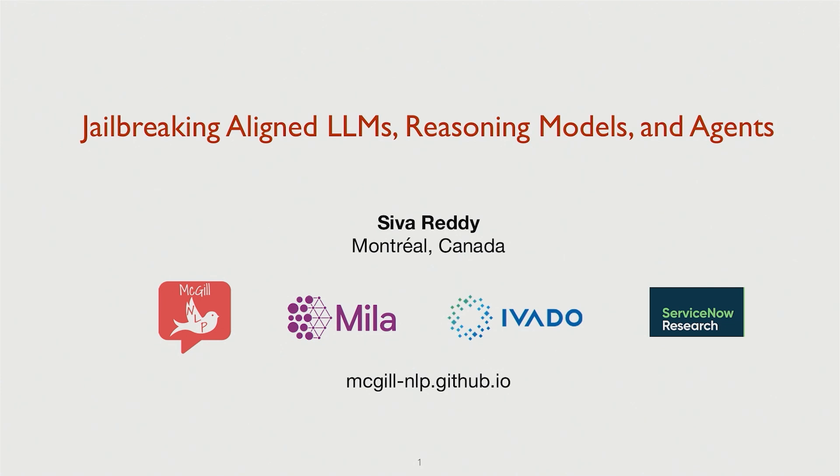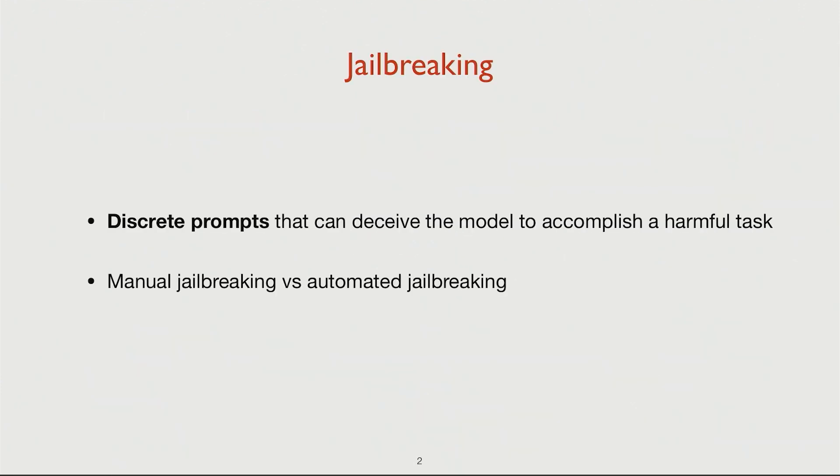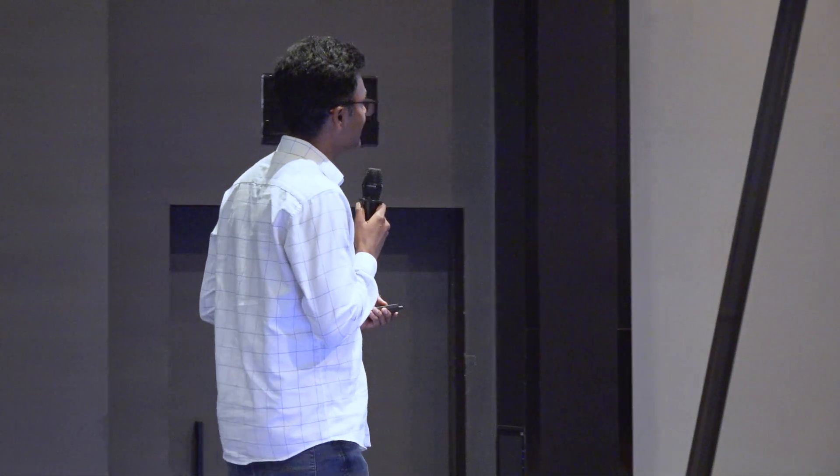We have seen a lot of jailbreaking, and I will continue the same trend. I will focus mainly on discrete prompts — discrete jailbreaking where you have actual natural language tokens to break the models. There are many ways to do it: manual jailbreaking is the easiest one, something each of us has tried many times, and then there's also automated jailbreaking.